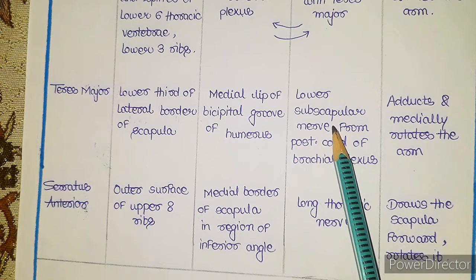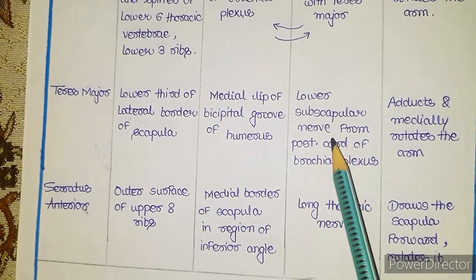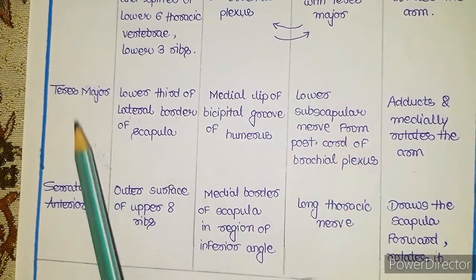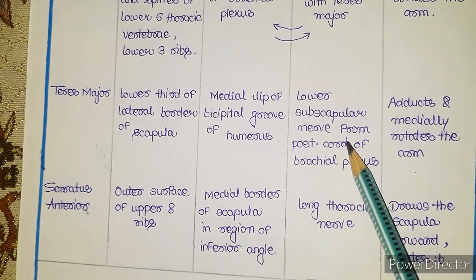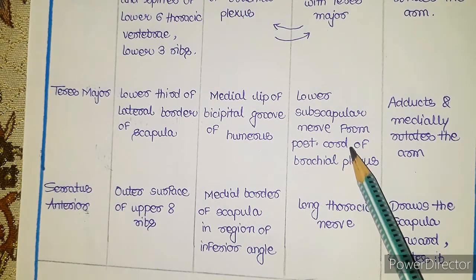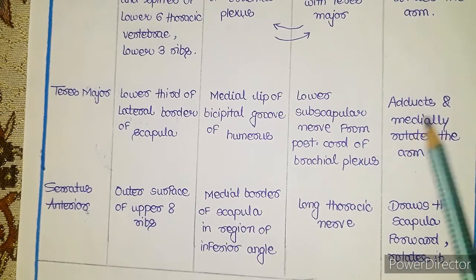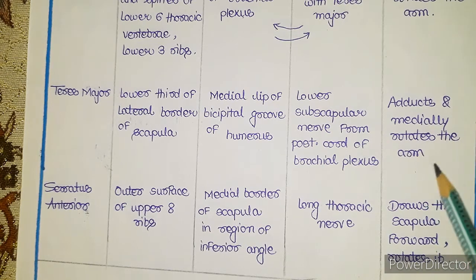The teres major is supplied by the lower subscapular nerve. Note that the upper and lower subscapular nerves also supply another muscle covered in this class — can you tell me in the comments which muscle that is? The action of teres major is that it adducts the arm — moves it towards the body — and medially rotates the arm.